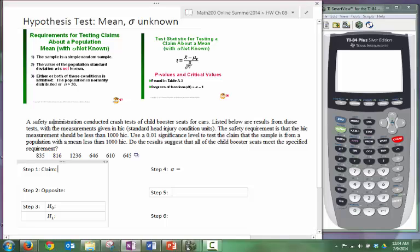First, we want to identify our claim. The administration conducted a crash test of child booster seats for cars. Listed below are the results for the test measurements given in HIC, that's a head injury condition. The safety requirement is that the HIC measurement should be less than 1,000 HICs. We want a .01 significance level to test the claim that the sample is from a population with a mean that is less than 1,000. This is a very small sample of six values.